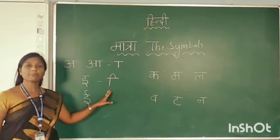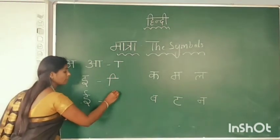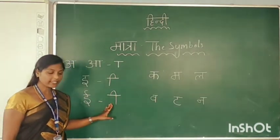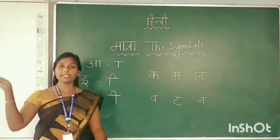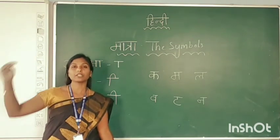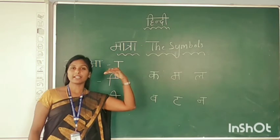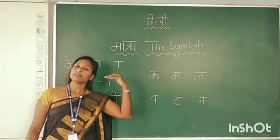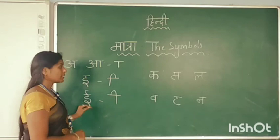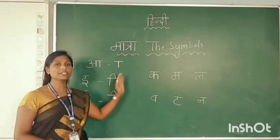This is the symbol of E and this is the symbol of EE. If it bends toward the right-hand side, it is the short E sound. If it bends toward the left-hand side, it is used for the long EE sound. These are the Vyanjan letters — if I use these symbols with the Vyanjan letters, we will see how the sound changes.